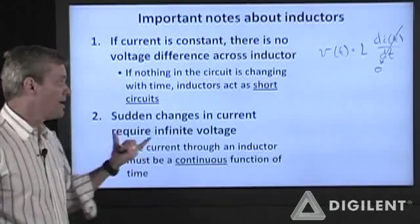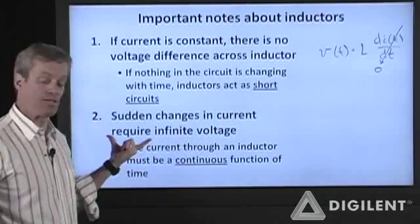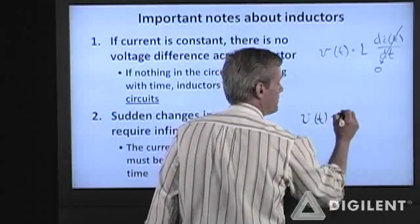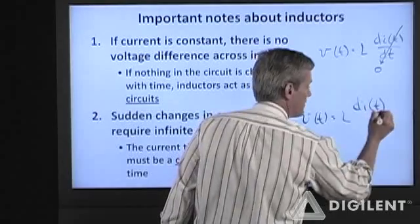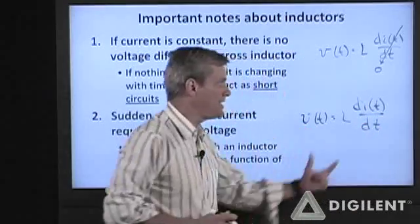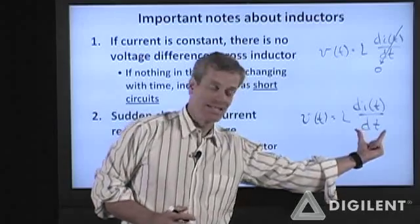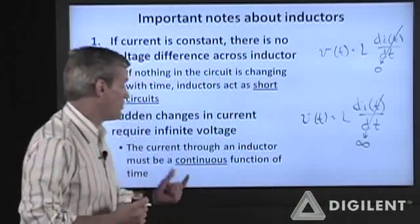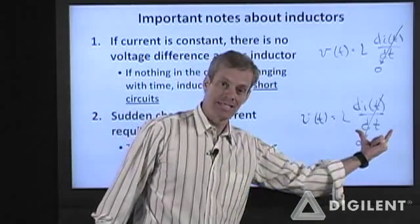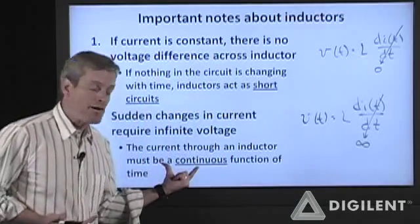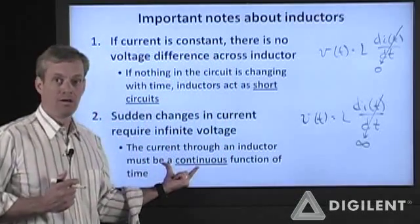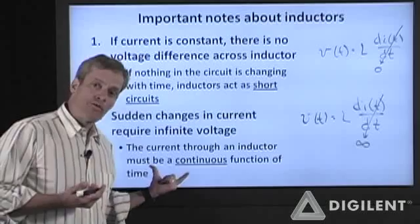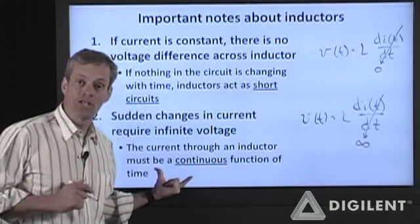Our second note, if I have a sudden change in current, that will require an infinite voltage. The same voltage-current relationship applies. V(t) = L di/dt. If I try to change the current instantaneously, the rate of change of current with time goes to infinity. So infinite voltage is required to change the current suddenly. That means that I would require infinite power in order to do that. I can't have infinite power in any realistic circuit, so the current through an inductor must be continuous. It cannot change suddenly.